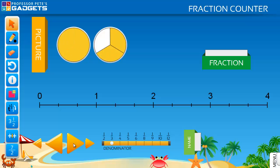Hide the fraction, name and fractions on the line, as well as the marker, and have your students mark on the number line where they think the number shown by the picture lies.